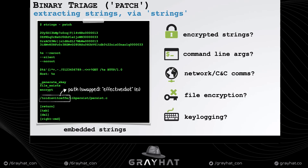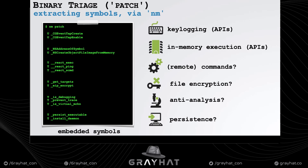We can also run the nm utility — built into macOS — to extract embedded symbols and APIs the malware imports. The APIs reveal likely capabilities, and the actual function names are even more insightful. We can see key-logging APIs, support for remote commands, file encryption, anti-analysis logic, and based on the function names, the malware likely persists.